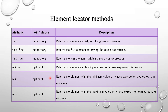Now we will see element locator methods. There are six methods: find, find_first, find_last, unique, min, and max — all work on elements only. For the first three methods — find, find_first, find_last — the with clause is mandatory. For the next three — unique, min, max — the with clause is optional.